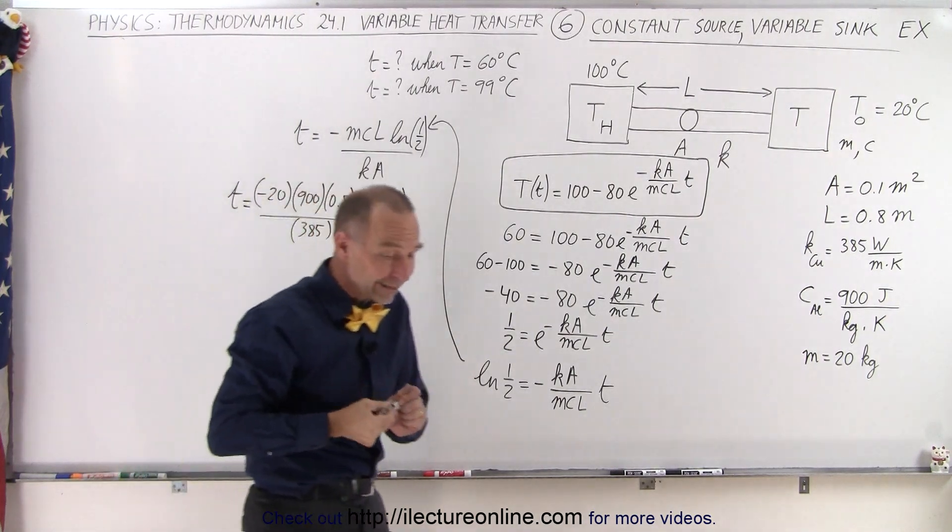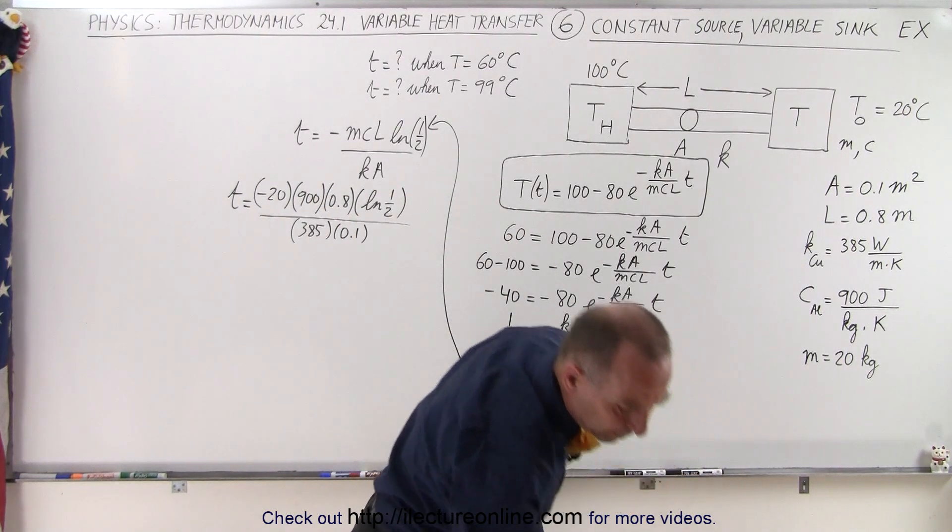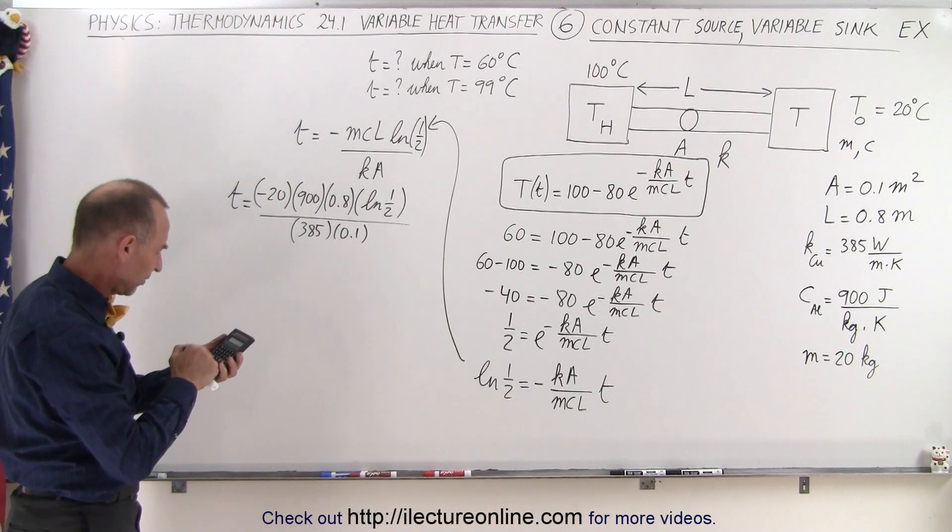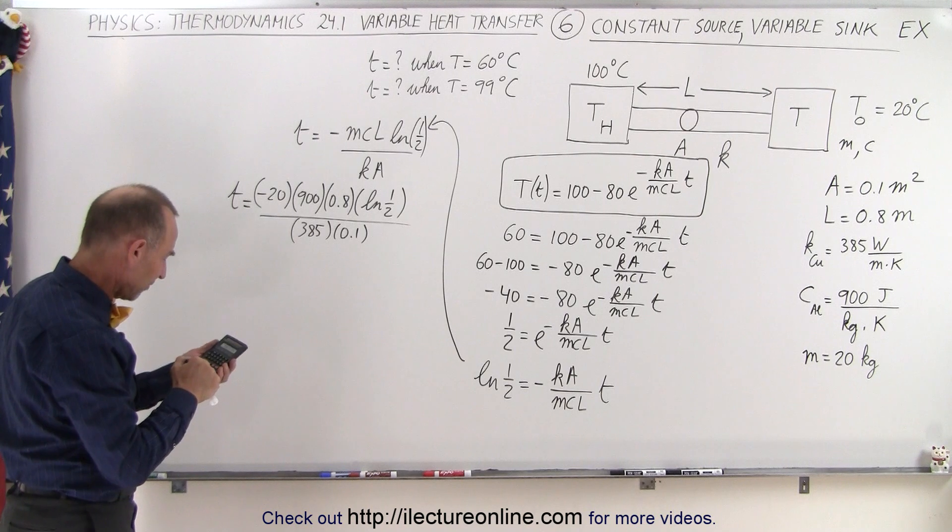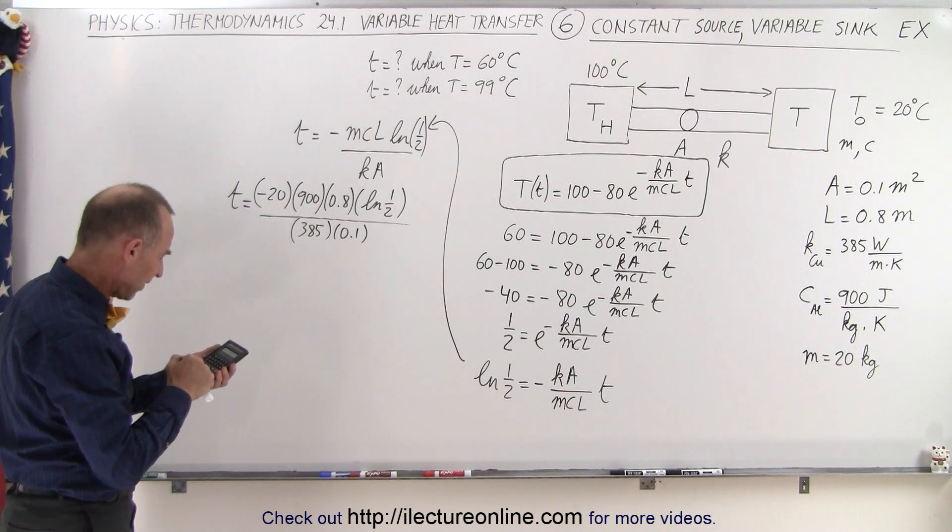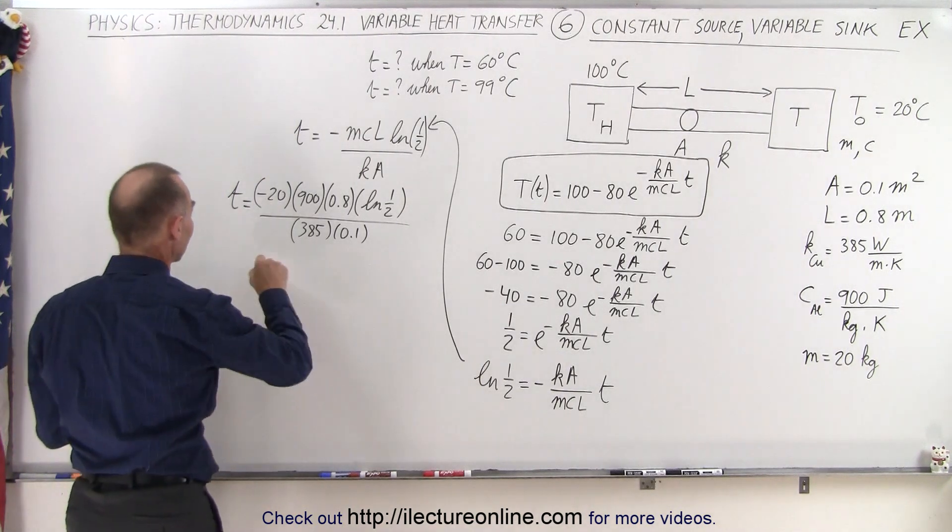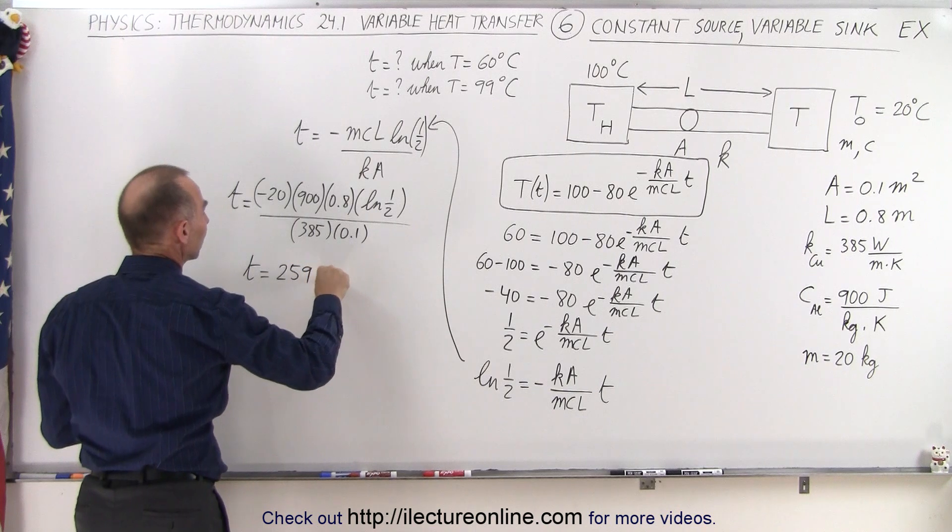Alright, let's see how long it takes for the heat sink. Here's my calculator. So we have 20 times 900 times 0.8 times 0.5, the natural log of that, then we multiply that times the negative, divide by 385, and divide by 0.1, that gives us 259 seconds. So T equals 259 seconds.